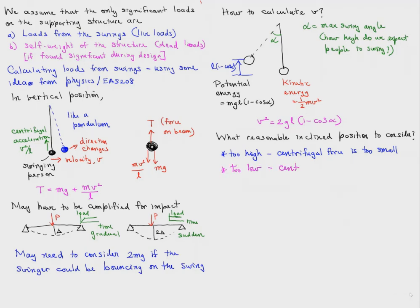If the position is too low, the centrifugal force is larger, but the overturning effect is not large. So we want to balance these two effects.